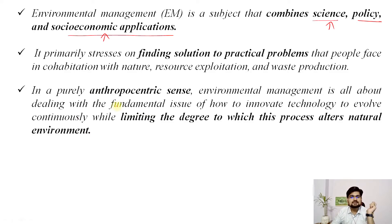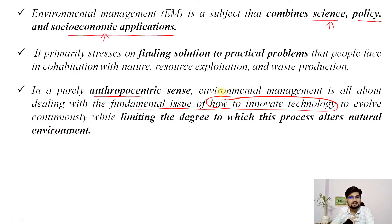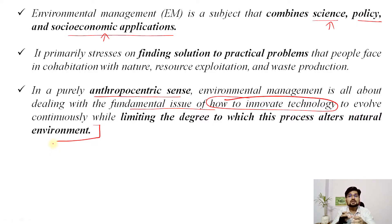The management aspect is a completely anthropocentric — humanistic, human-centered — approach, because we are talking about management in terms of our own benefits. We are dependent upon natural resources, so if resources are not well managed they will not be available for a longer time for us to survive. Environmental management is about dealing with the fundamental issue of how to innovate technology continuously while limiting the degree to which the process alters the natural environment — not pressuring the environment to the point where it is non-regenerative or completely gone.